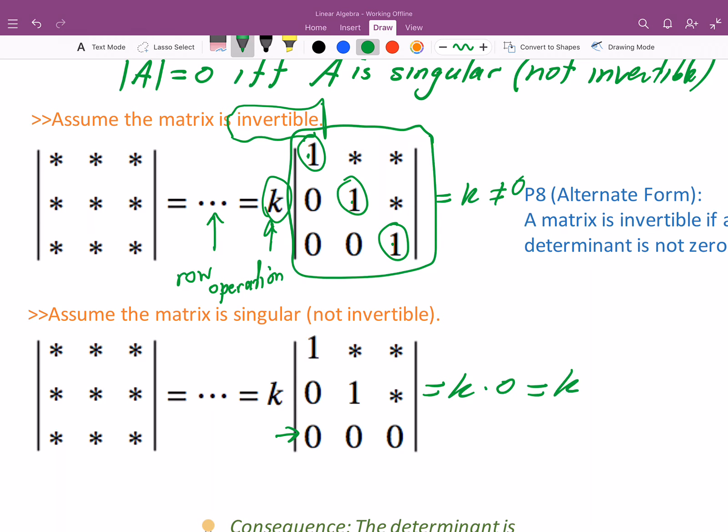So this would be k times zero, which is zero. So that establishes that fact, that the matrix determinant is zero only if you have a singular matrix.